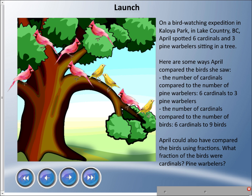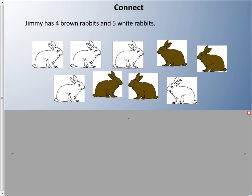April also could have compared the birds using fractions. If you were April, what fraction of the birds were cardinals and what fraction were pine warblers? To start, we're going to use animals again.